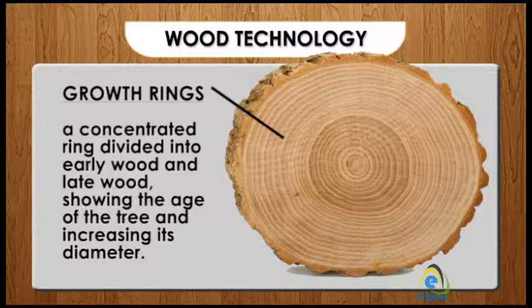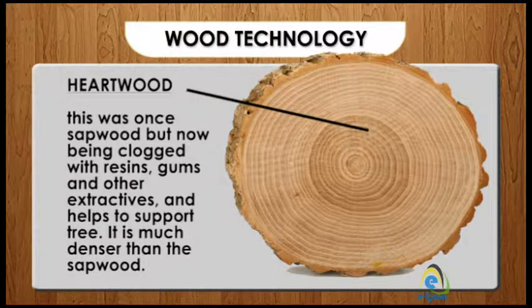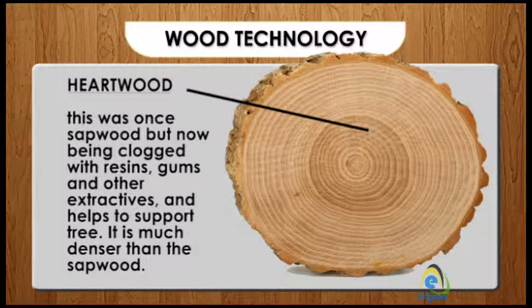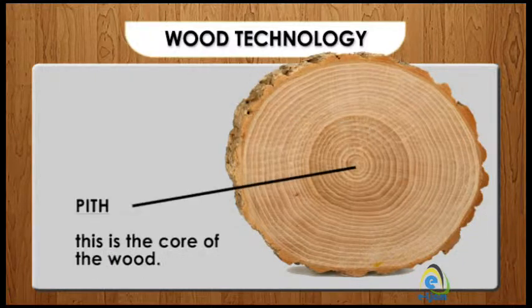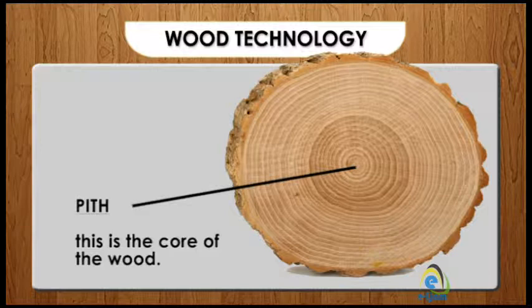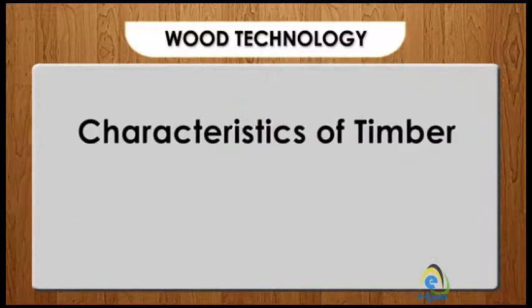Six: heartwood — this was once sapwood but is now clogged with resins, gums, and other extractives, and helps to support the tree. It is much denser than the sapwood. Seven: pith — this is the core of the wood; it gives strength and rigidity to the tree.